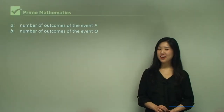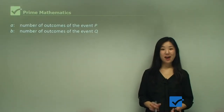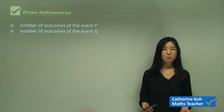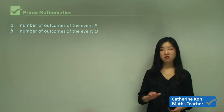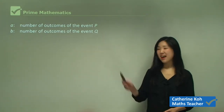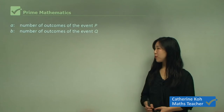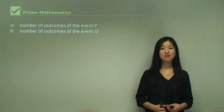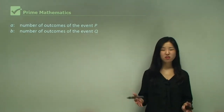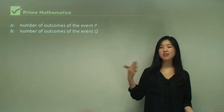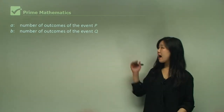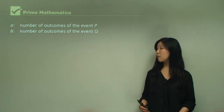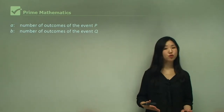Hey guys, today we're going to be looking into some counting techniques — basic counting techniques, but it's not about just counting numbers. Have a look on the board. I've got A as the number of outcomes of the event P, some random event P, and B as the number of outcomes of the event Q.